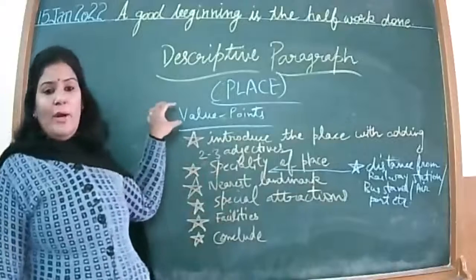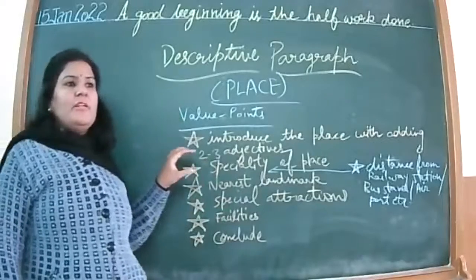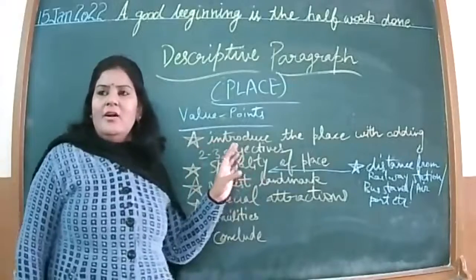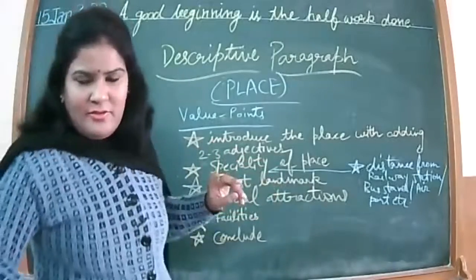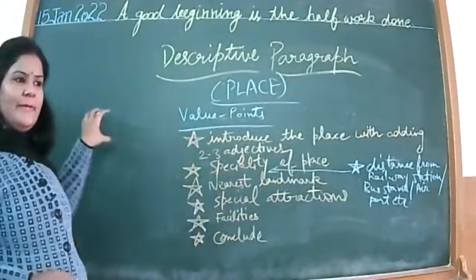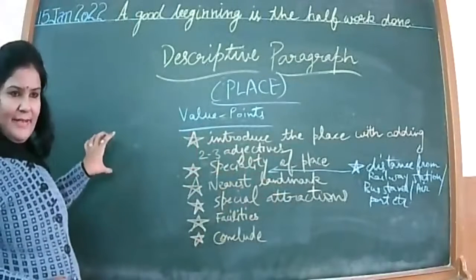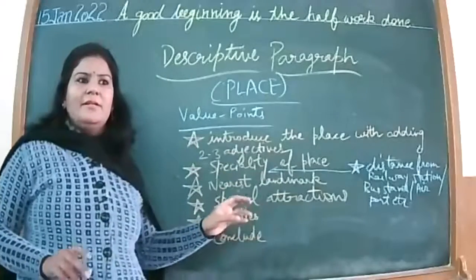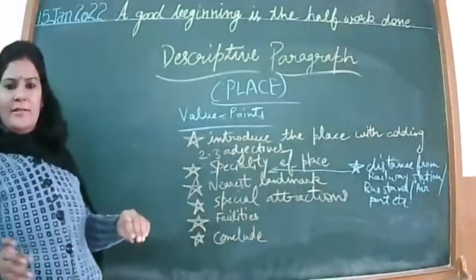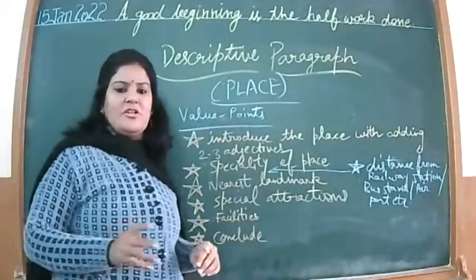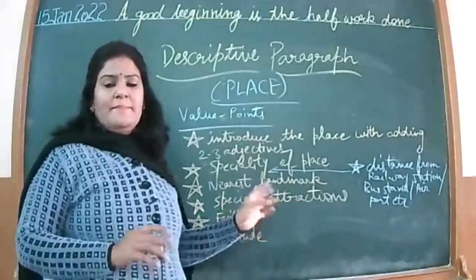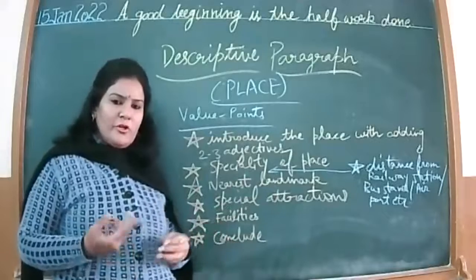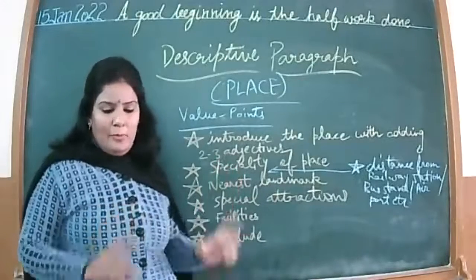Points are given to you in the guided type because every child has not visited Kashmir, Chandigarh, or Delhi. In that case you will get points and develop upon those points. But in case it is a library, park, mall, theater, railway station, or bus stand, then you can develop on your own. When a general place is given, you develop on your own; when a particular place is given, points will be provided.